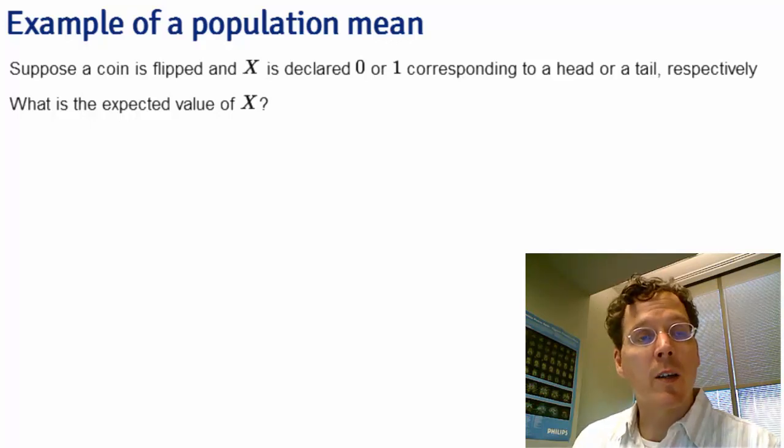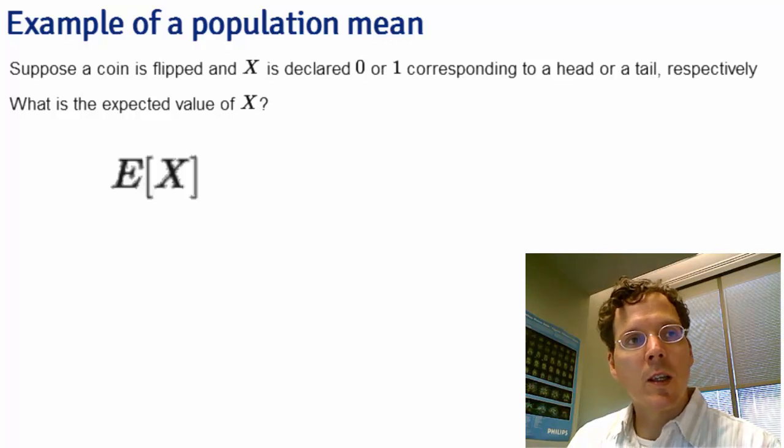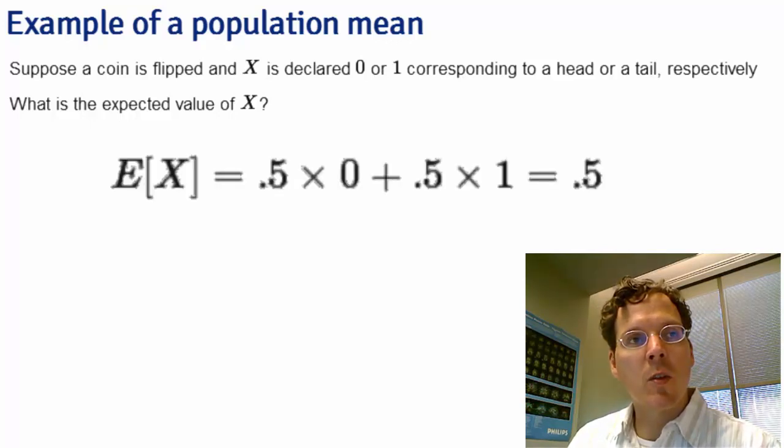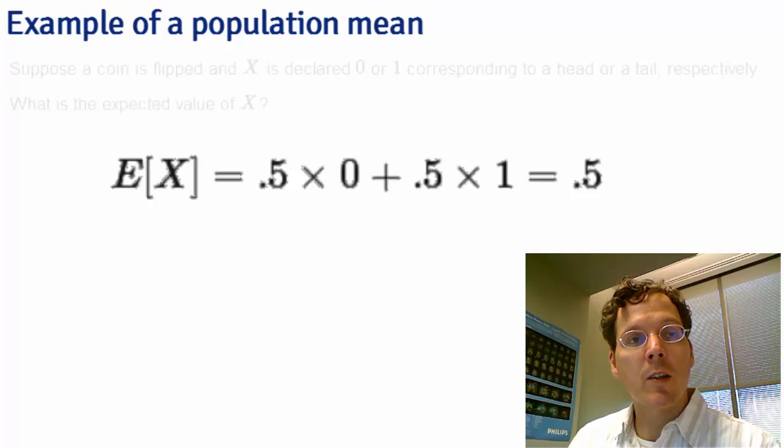The expected value is a property of the population. If we plug into our formula, the expected value of x is the probability 0.5 times the value 0 plus the probability 0.5 times the value 1. So all the values that the coin can take, 0 or 1, times the probability that it can take them, added up. This winds up to be 0.5.